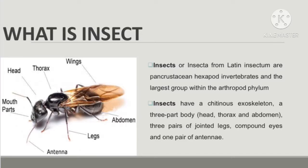What is actually an insect? As we can see here, insects have three main sections of their bodies: the head, the thorax, and the abdomen. They have six legs connected to the thorax. Most insects also have wings and antennae.